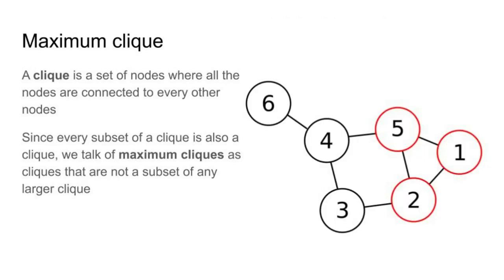Let's discuss the concept of cliques. A clique is a set of nodes in the network where every node inside that set is connected to every other node inside the set. For instance, in our example network on the right, you can see that nodes 5, 2, and 1 form a clique — all those elements are connected to all the other elements. Why do we say maximum clique? Any subset of a clique will also be a clique, so it makes sense to define the maximum clique as a clique that is not a subset of any other larger clique. Maximum cliques must also have more than two nodes.